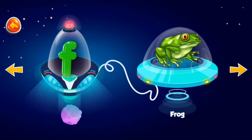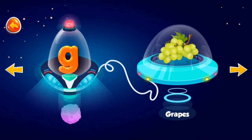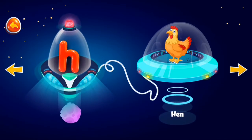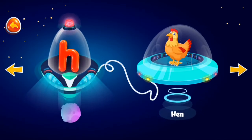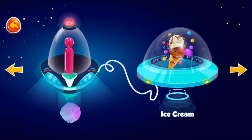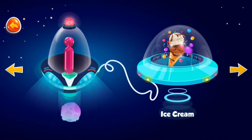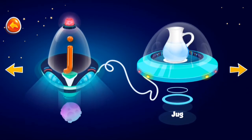F for frog, G for grapes, H for hen, I for ice cream, J for jump.